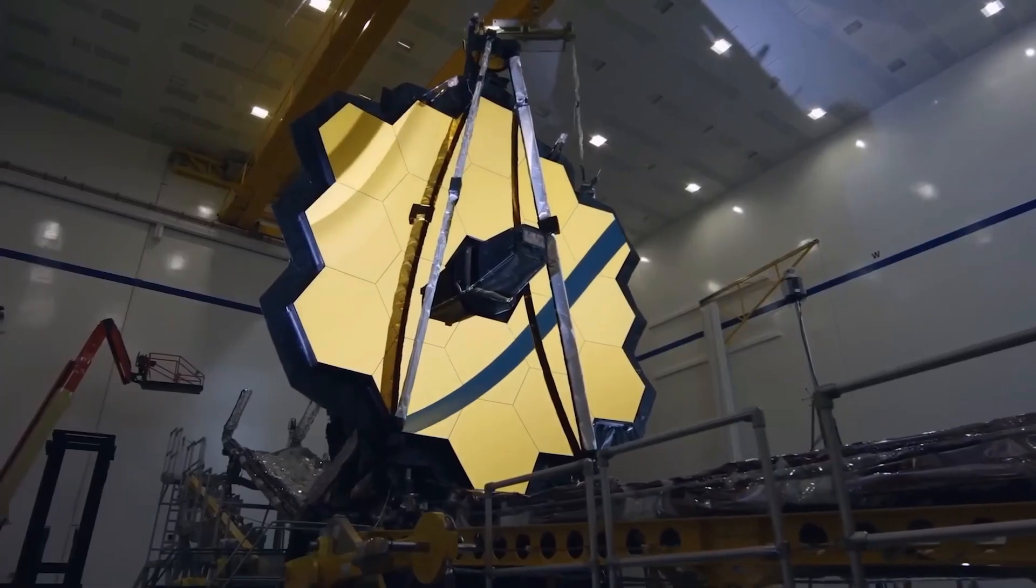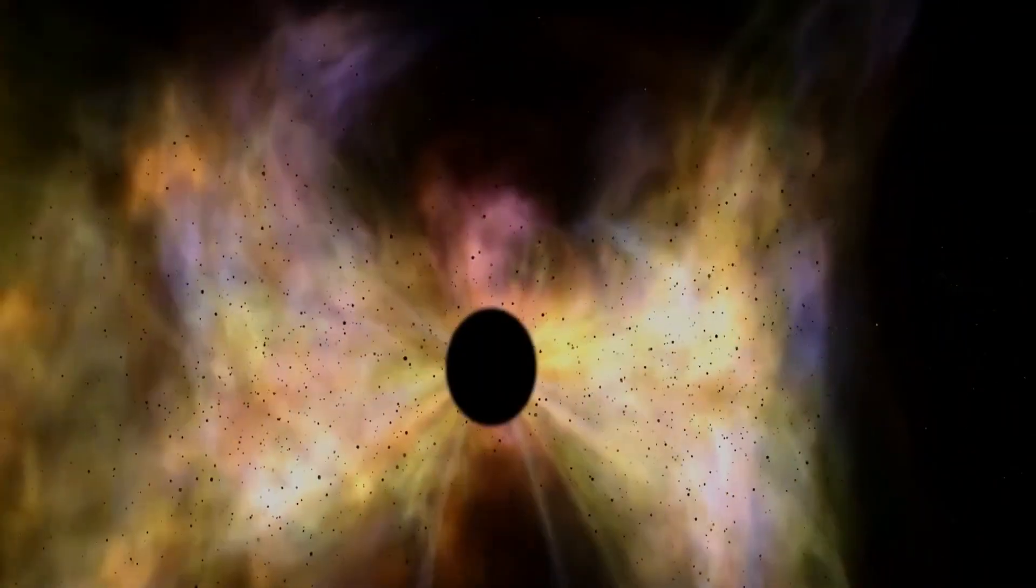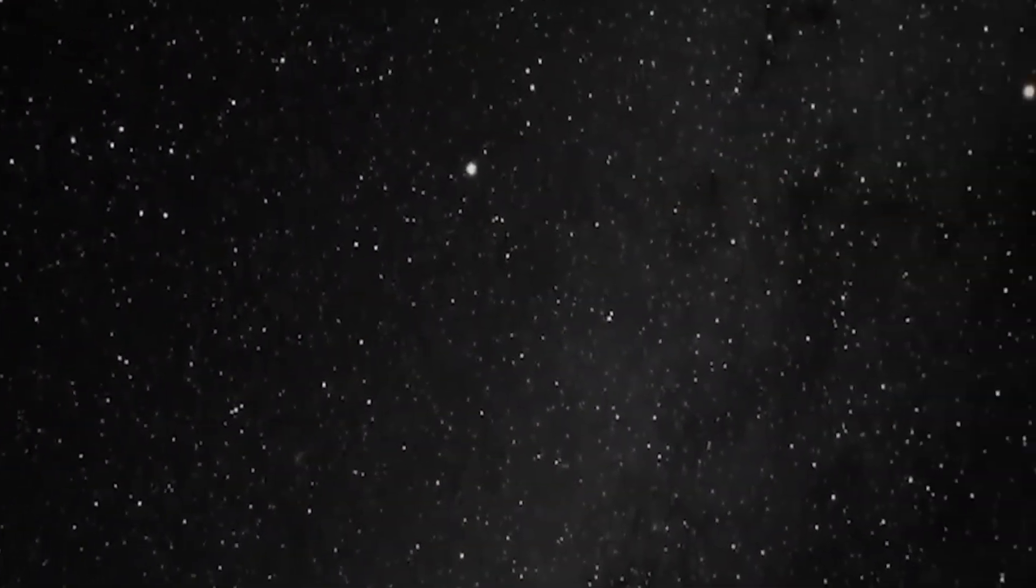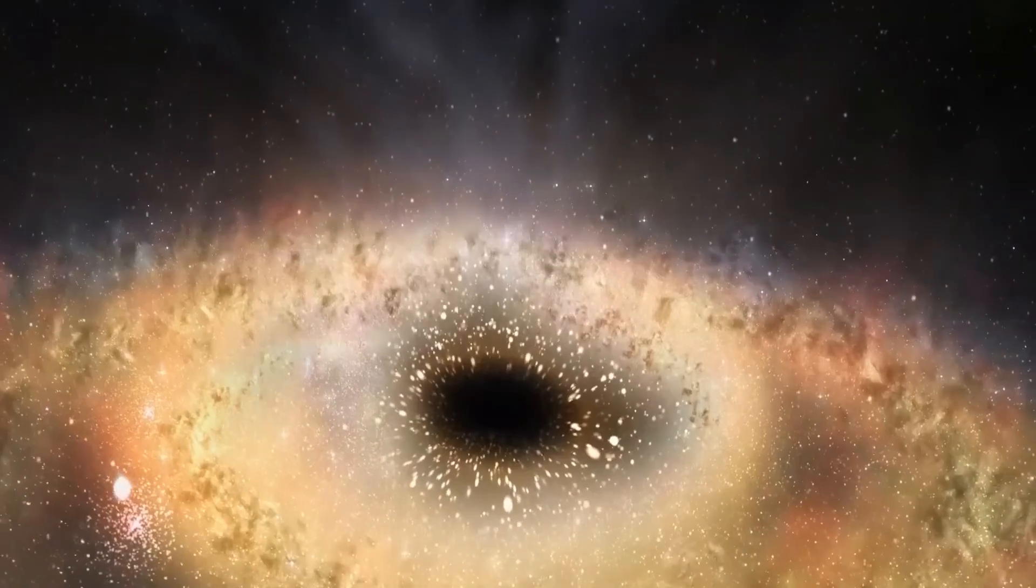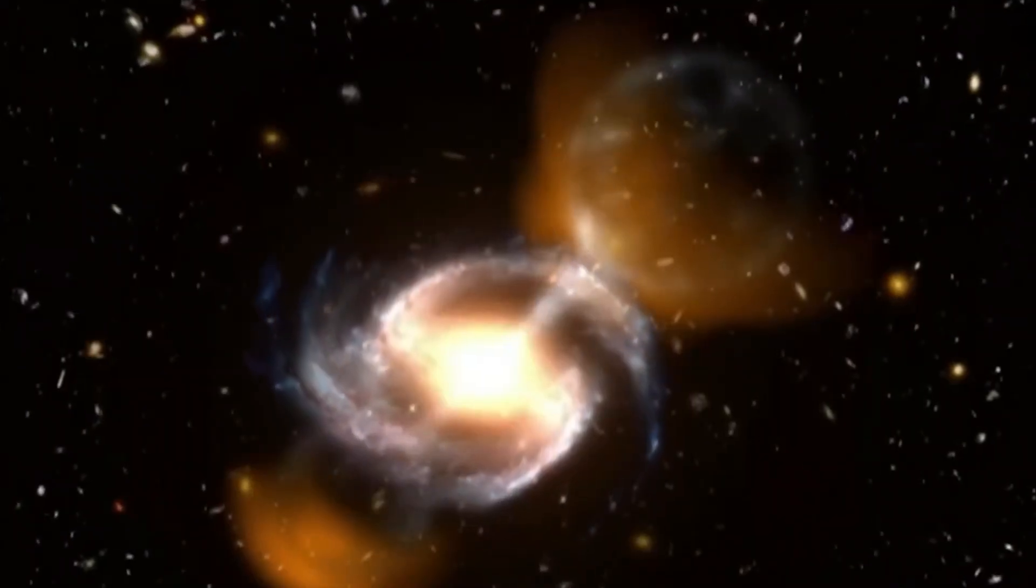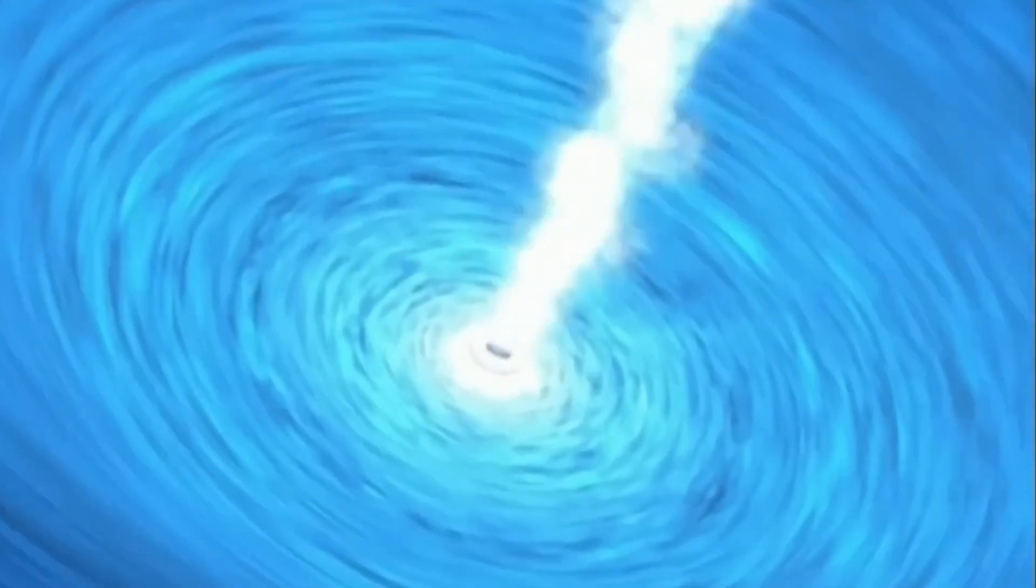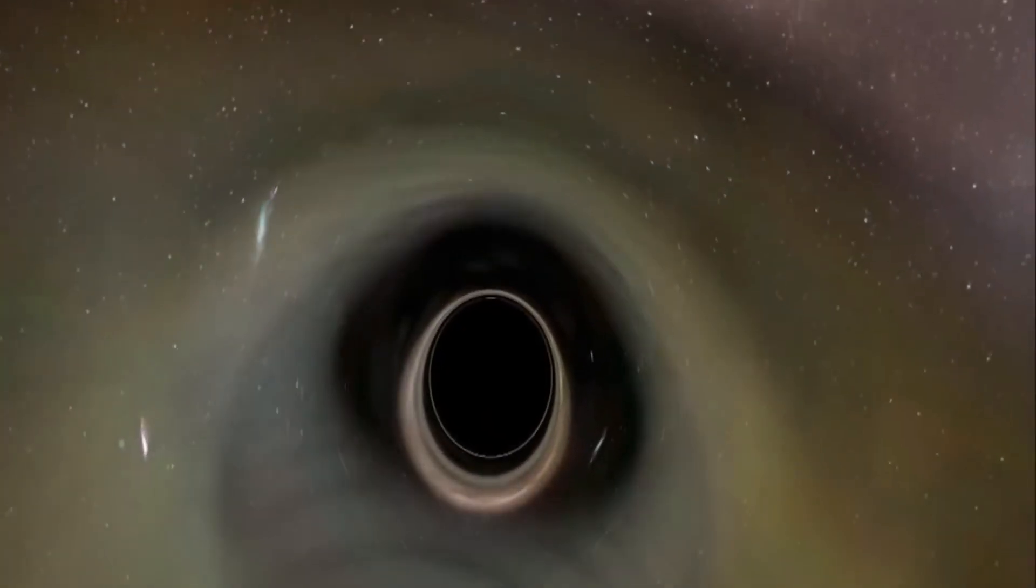So there you have it folks. The James Webb telescope has once again amazed us with its remarkable capabilities. With the recent revelation of 500 unknown objects entering our solar system, our comprehension of the universe continues to expand. What could these enigmatic visitors be? Are they remnants of distant galaxies, or perhaps indications of extraterrestrial life? Share your thoughts in the comments as we eagerly anticipate more groundbreaking discoveries and prepare for new cosmic adventures.